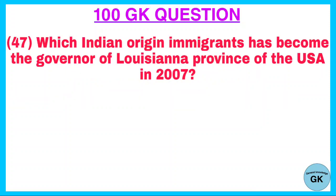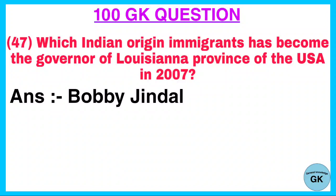Question. Which Indian origin immigrant became the governor of Louisiana province of the USA in 2007? Answer. Bobby Jindal.